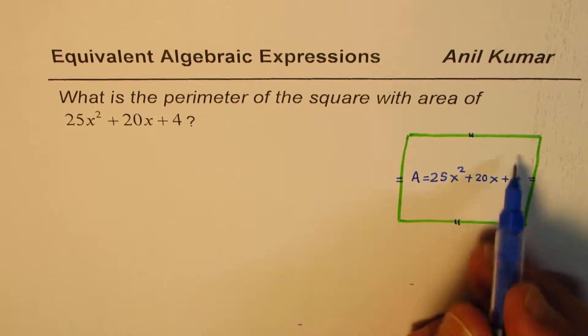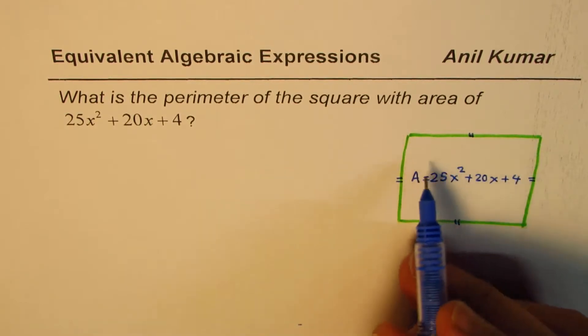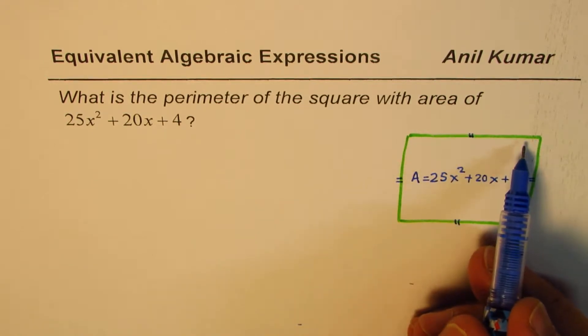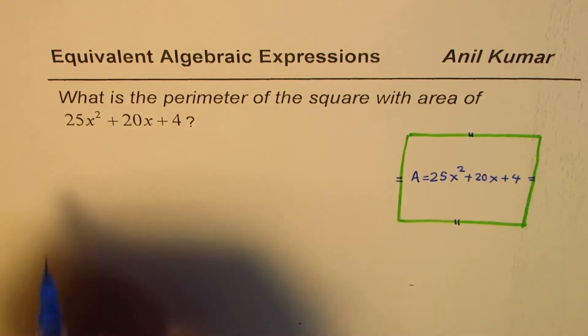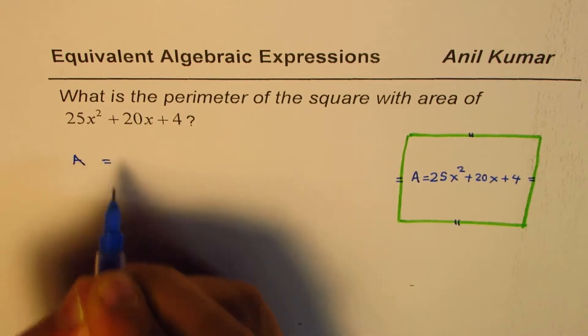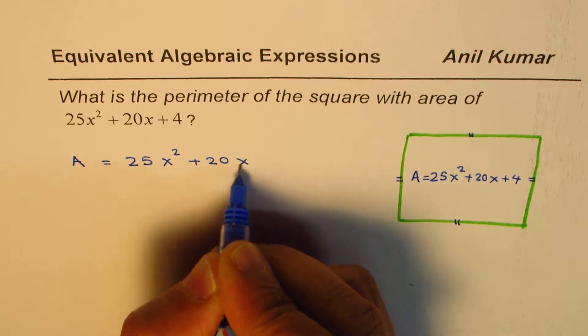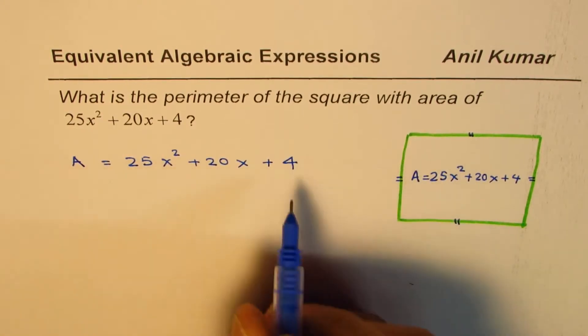In this case, the perimeter will be 4 times the side length, so the idea is to find the side length from the given area expression A = 25x² + 20x + 4.